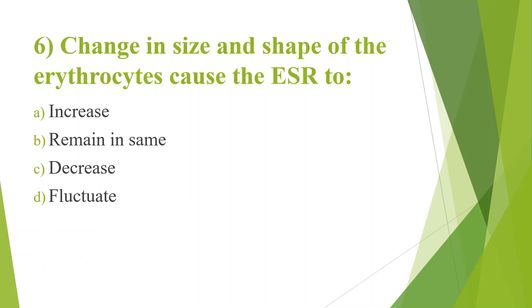Sixth question: Change in size and shape of the erythrocytes causes the ESR to? Option A, Increase; Option B, Remain the same; Option C, Decrease; Option D, Fluctuate. Answer is Option D, Fluctuate. Variation in RBC size is called anisocytosis and variation in RBC shape is called poikilocytosis. The answer will be fluctuation in ESR because in microcytosis it leads to decreased ESR, while macrocytosis leads to increased ESR.